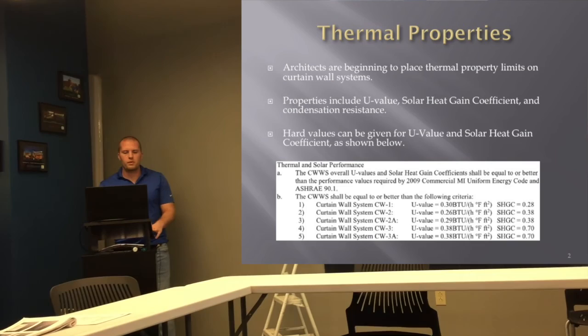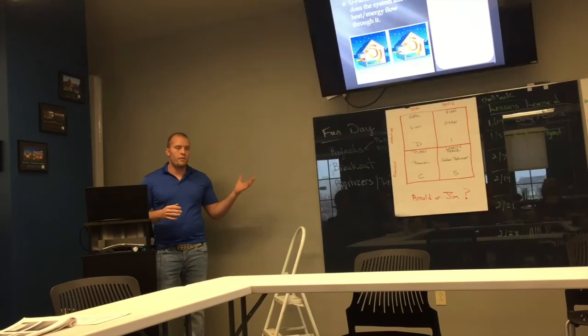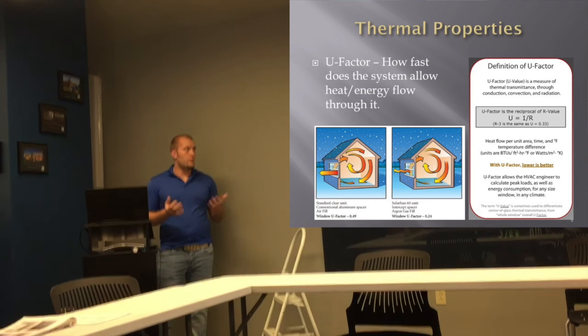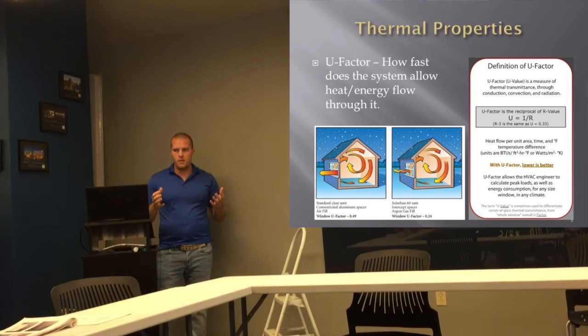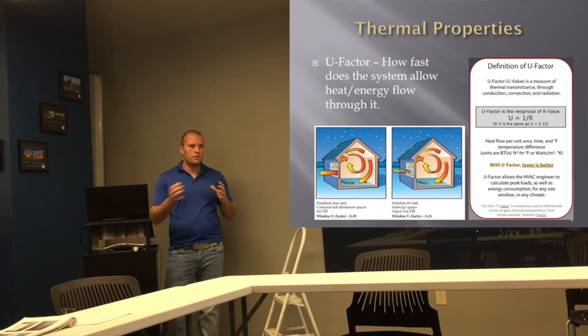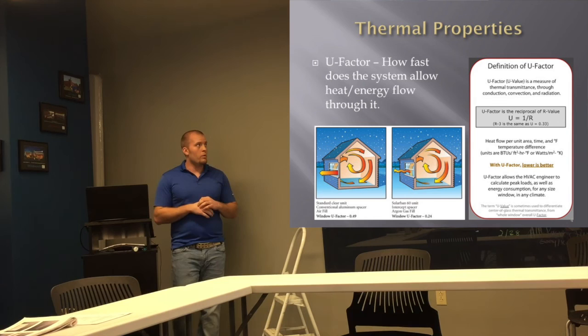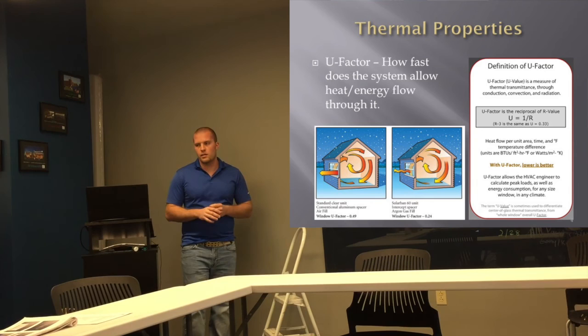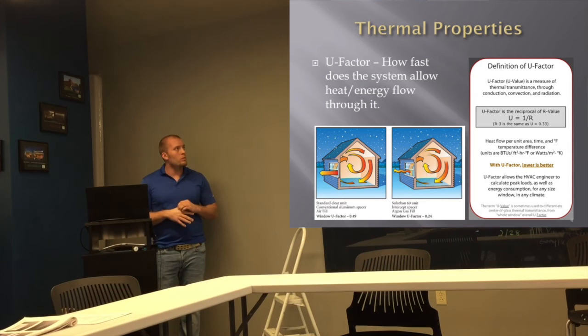The U-value, or view factor, is essentially how fast heat will move in and out of your medium. You're paying to heat a space, and energy wants to flow from high energy to low energy, so your building is always heating the outside. We want to insulate our windows and walls to slow that down. You want to keep the U-value as low as possible to retain the heat you're producing inside the building.